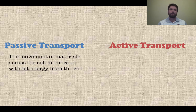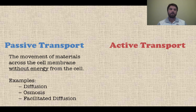So let's start with passive transport. That is the movement of materials across the cell membrane without energy from the cell. There is no energy used in order for this to happen — it is a passive process. The examples here are diffusion, osmosis, and facilitated diffusion. We're going to look at those here in just a minute.